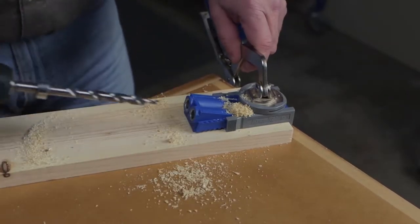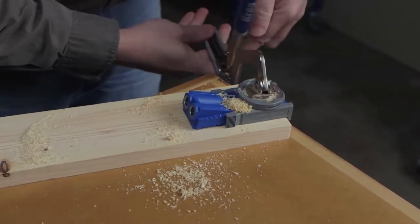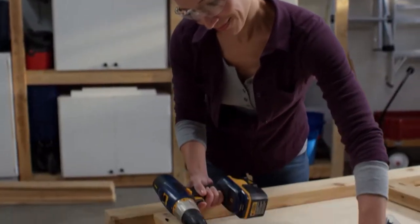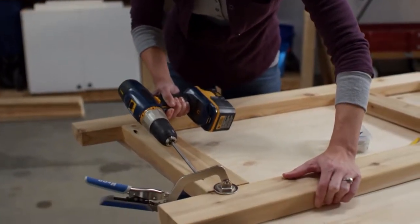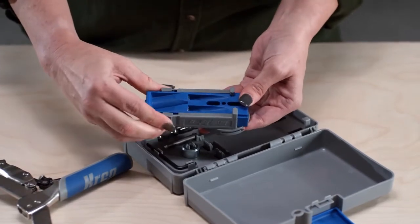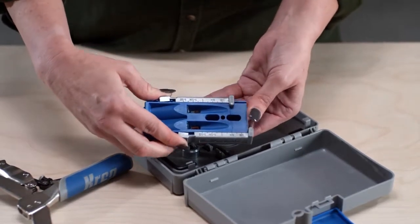The Craig Jig R3 works with materials from half inch to one and a half inch thick to build indoor and outdoor projects using everything from thin plywood to two by fours. Just adjust the positioning sliders on the jig to match the workpiece thickness.